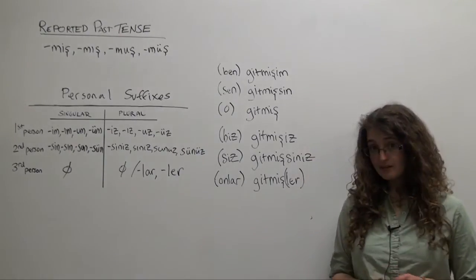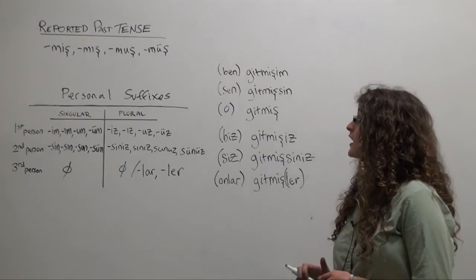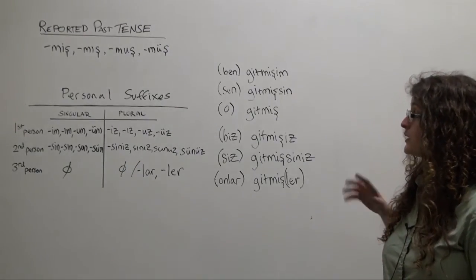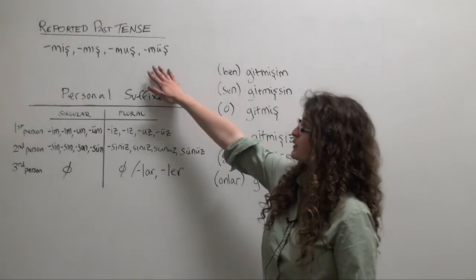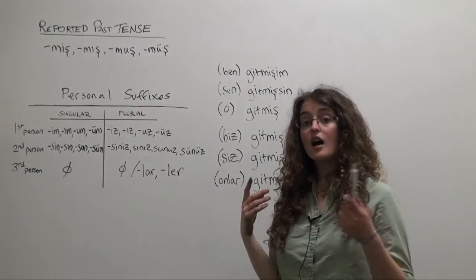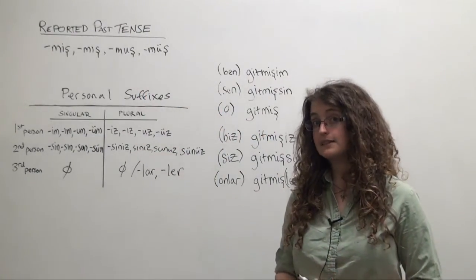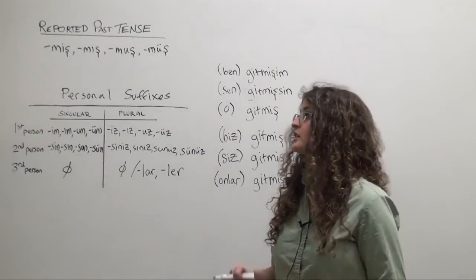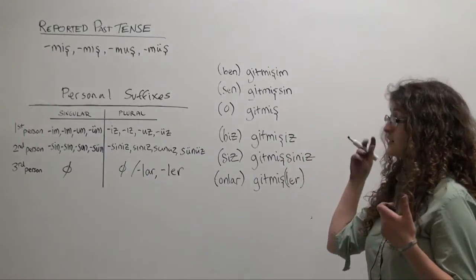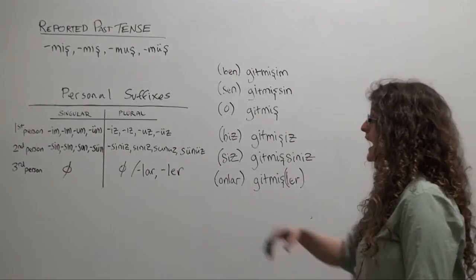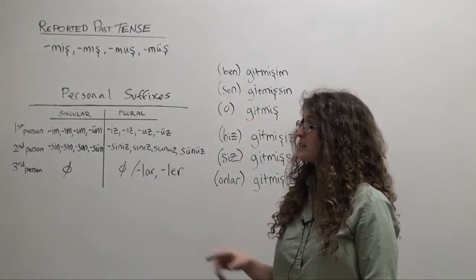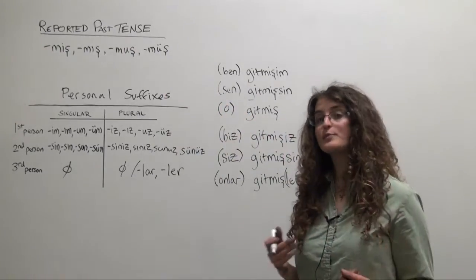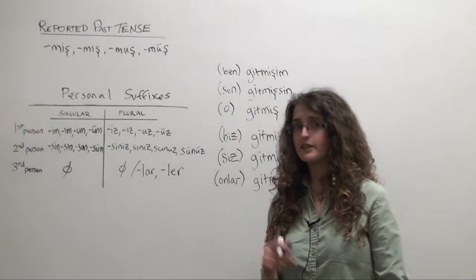Now I want to emphasize that although we are following the rules of four-way vowel harmony when we add the reported past tense ending, we don't need to worry in this case about any kind of buffer. So if the verb to which you are adding the reported past tense suffix ends in a vowel, you proceed exactly as usual.